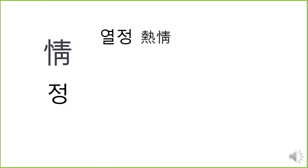Let's look at some words using 정. 열정. In Chinese character, 열 means heat. What kind of emotion can you think of that is heat-related? Passion. 열정 is passion.